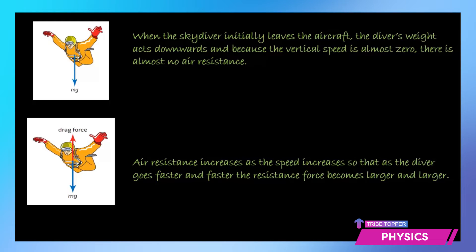Let's take the case of a skydiver. When the skydiver jumps initially, he doesn't open the parachute immediately. As you can see in the figure, initially when he leaves the aircraft, the main force acting is the weight of the person — the weight of the diver — because initially his vertical speed was almost zero. So he just had a force due to gravity, that is his weight, and there was almost no air resistance in the beginning.